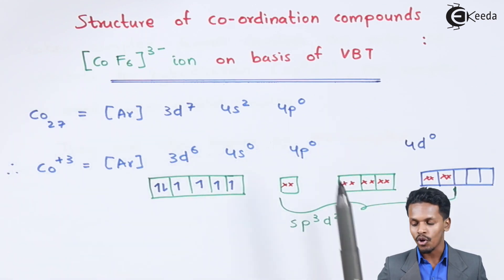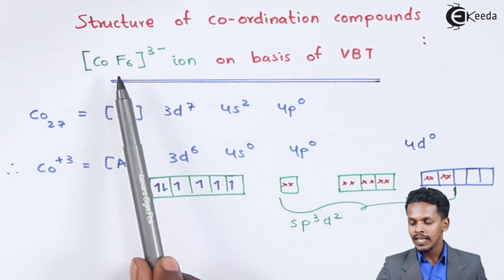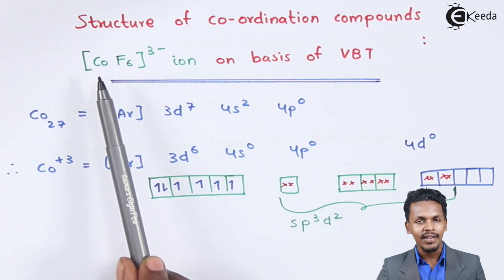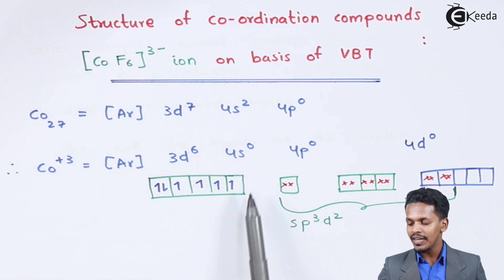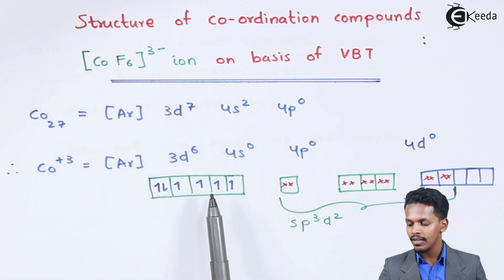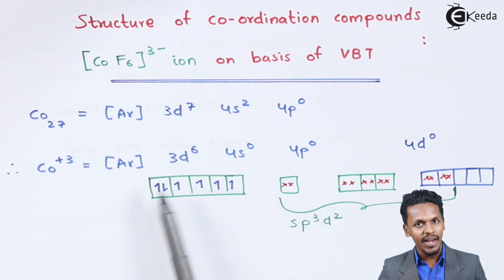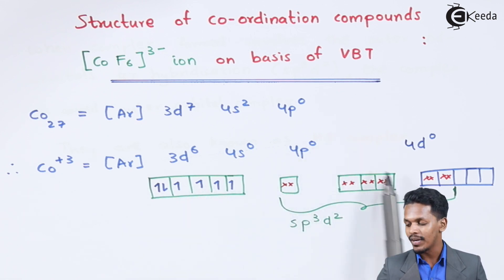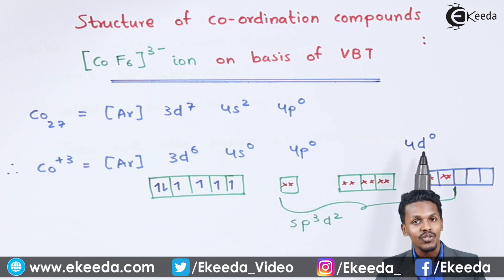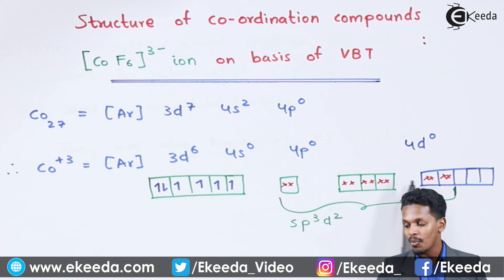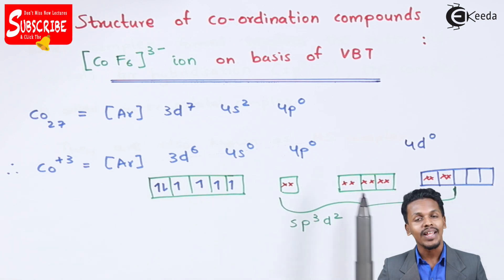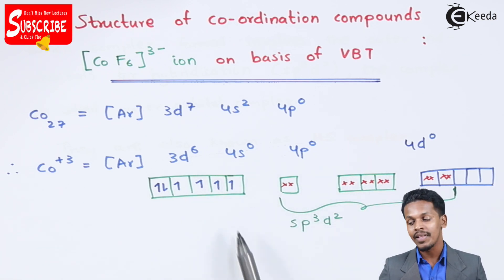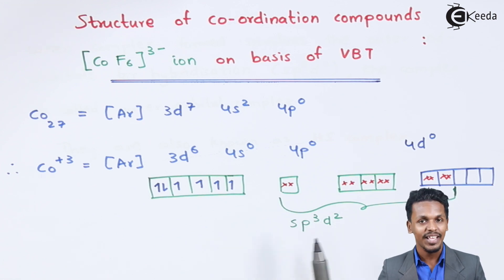Here is the example I am going to talk about. The fluorine ions are surrounding the cobalt metal. We know that fluorine is a weak field ligand. In that case the hybridization turns out such that the electrons will not get paired up. We get an s orbital, p orbital, and the outer d orbital — it is outside the d orbital, not inside. That's the reason this is known as outer orbital complex, where the hybridization is sp3d2, not d2sp3.